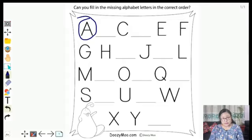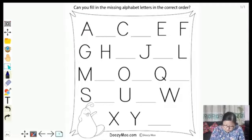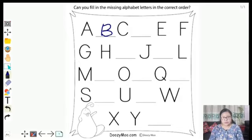B. Okay, B. All right, A, B, C. Again, letters missing here. So what comes after C? D. Okay. D, E, F, G, H. Then what comes after H? I.